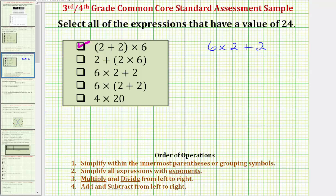So the first step in simplifying this expression is to find this product, six times two is equal to 12. So this simplifies to 12 plus two, which is equal to 14, not 24. So we do not check this box.